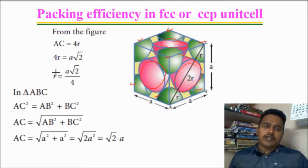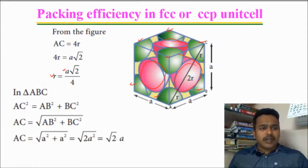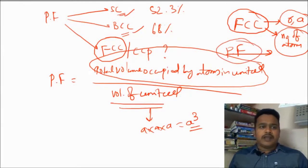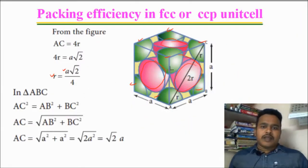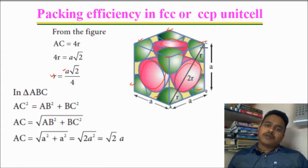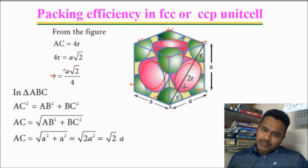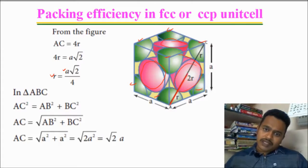We need a relation between R and A. We need to observe only one face — any face. I will observe this face. While observing this face, there is a face diagonal.